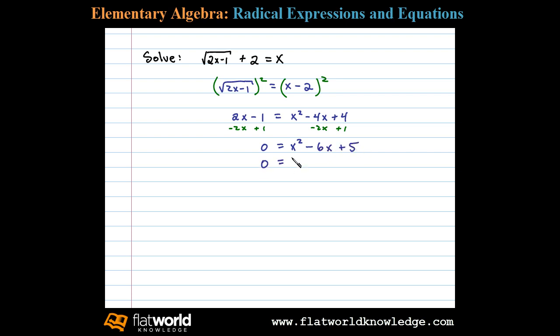We then factor. Here we have x squared factors x times x and 5 factors 1 times 5. 1 and 5 add up to negative 6 if they're both negative. So we can write x minus 1 times x minus 5.